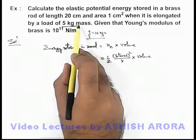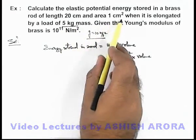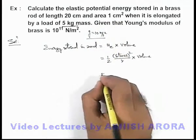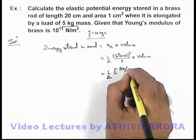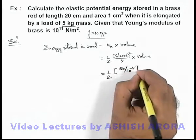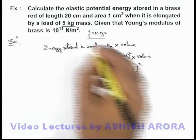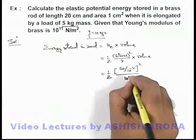And 50 newton is the weight and cross-sectional area is 1 centimeter square, so we can substitute the values. Stress can be written as 50 divided by 10 to power minus 4, whole square, by Young's modulus is given to us as 10 to power 11.